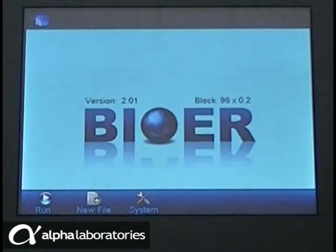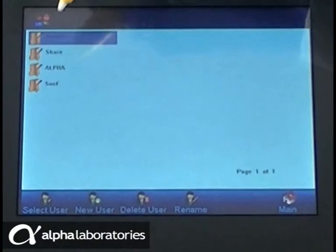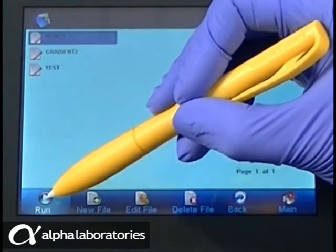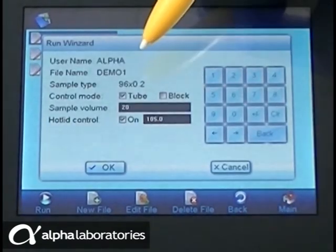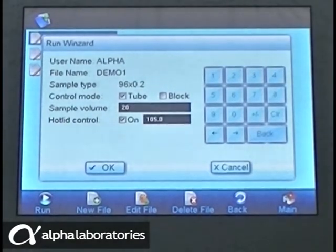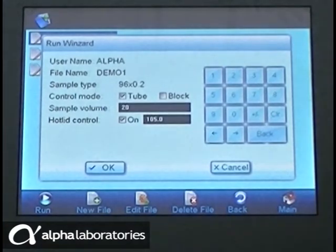When you are ready to run your PCR assay, select Run from the main menu and locate your required protocol. Touch Run again. Choose whether you require the set temperatures to apply to the tube or the block. Tube temperature uses an internal calculation to estimate the actual sample temperature in the vial. This is more accurate but takes longer. For robust PCR protocols that need to be run faster, choosing block temperature may be preferable. Enter the volume of your samples. This is very important when using tube control. The hot lid may be turned on or off on this screen and the temperature set between 30 and 110 Celsius.